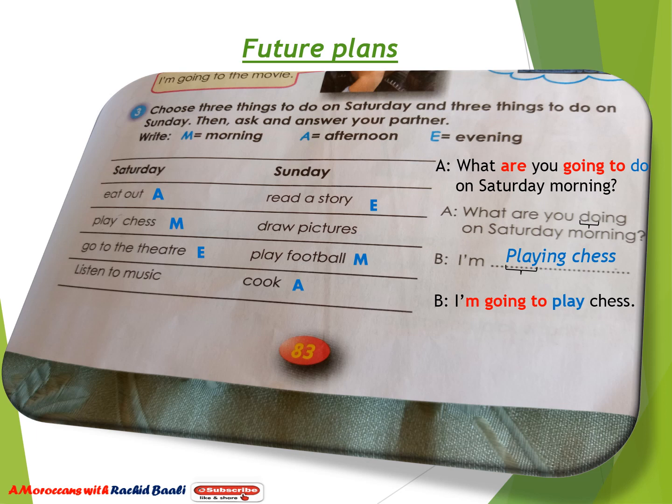Here are two other examples using this form. The first example: 'On Saturday afternoon, I'm going to eat out.' The other example: 'On Sunday evening, I'm going to read a story.' Is this form clear — 'be going to'?